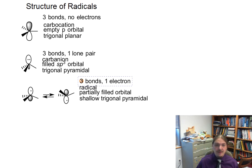Let's talk about the structure of radicals. At the top here, I have the structure of a carbocation. Since it only has three electron domains, three bonds, no lone pairs, the carbocation is trigonal planar, sp2 hybridized with an empty p orbital. The carbanion has that filled sp3 orbital and trigonal pyramidal geometry. It has four bonding domains, three bonds, one lone pair.